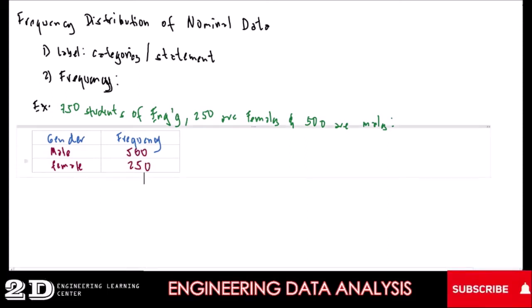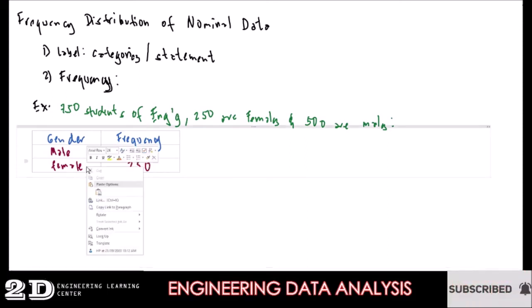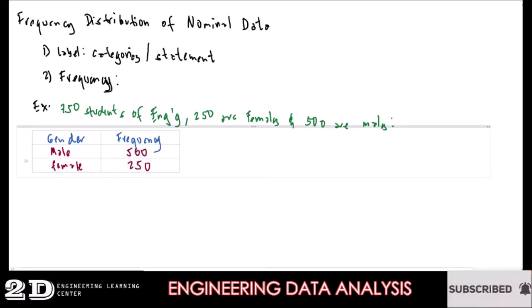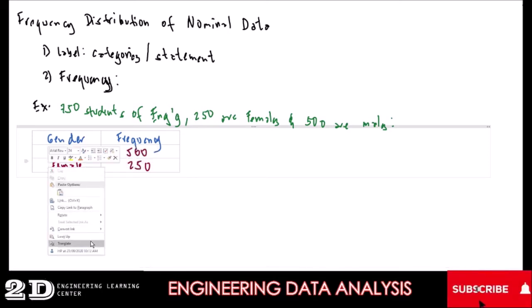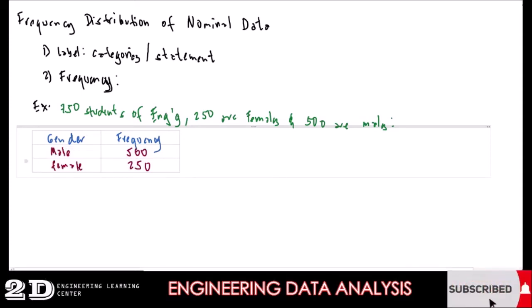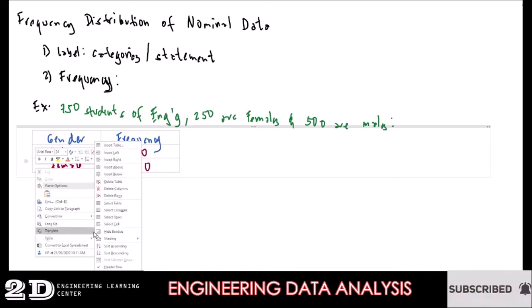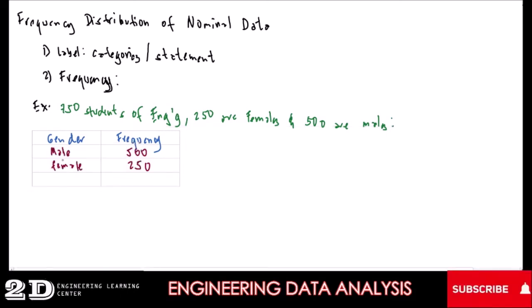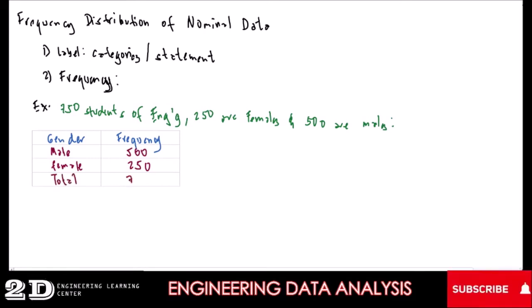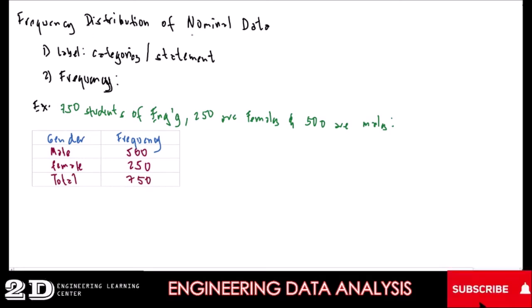We can add another row for the total. We insert a row below and write the total, which will be 750. This is how we create a frequency distribution table for nominal data.